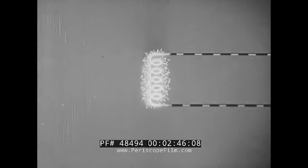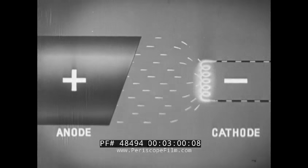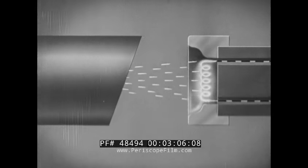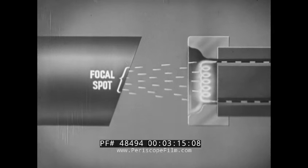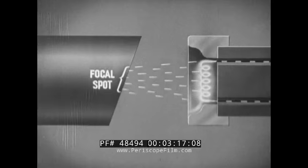The source of the electrons is a wire filament. When it is electrically heated, negatively charged electrons are released. If we connect this filament as a cathode or negative pole and introduce a positive pole, an anode, the negatively charged electrons will speed toward the anode. A focusing cup around the filament concentrates the flow of electrons on a small area of the anode. This is called the focal spot. The smaller the focal spot, the sharper the x-ray image.